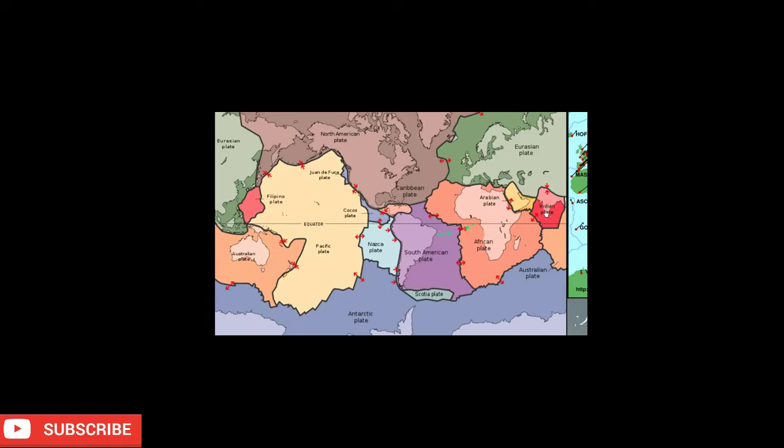We know that India is jamming into the Eurasian plate right now causing the Himalayas to get higher and higher. What if we rewind that? Let's bring India back down towards Antarctica. Same thing with Australia. We have new plate material being formed between Australia and Antarctica. That's making the continents move apart. Let's bring them back together.